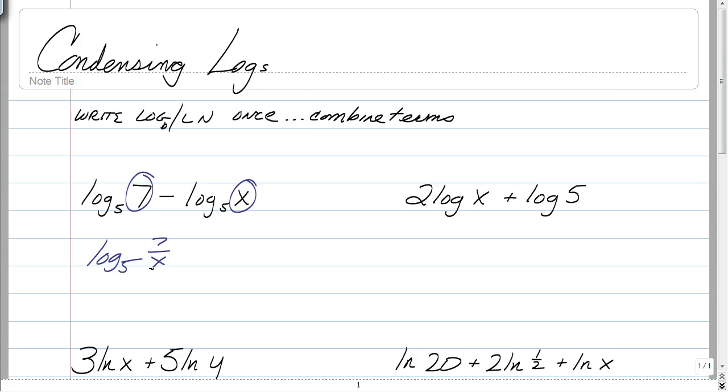All you have to do is write log base 5 once and use your subtraction property. So, let's go to the next one. We know that this is the exponent of x and we see an addition sign, so we're going to have some multiplication here. So, we're just going to write log one time.